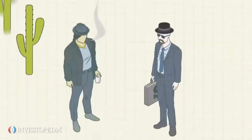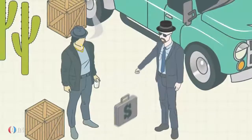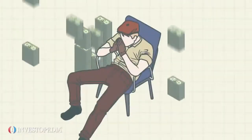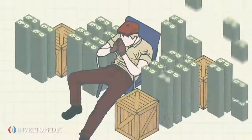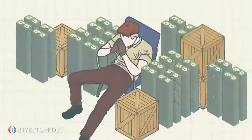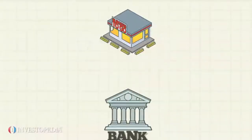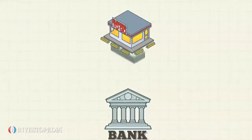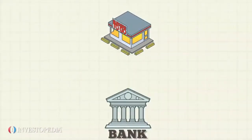Illegally earned money needs laundering in order for the criminal organization to use it effectively. Dealing in large amounts of illegal cash is inefficient and dangerous. The criminals need a way to deposit the money in financial institutions, yet they can only do so if the money appears to come from legitimate sources.